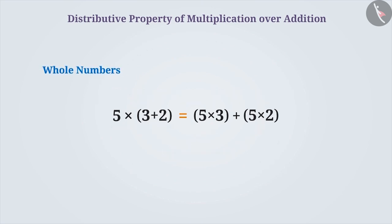Therefore, for any three whole numbers a, b and c, a into b plus c can be distributed as a into b plus a into c. This is called the distributive property of multiplication over addition.